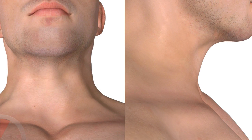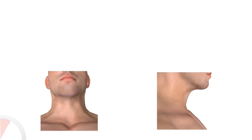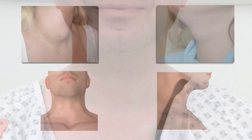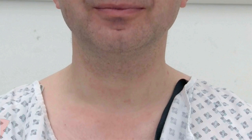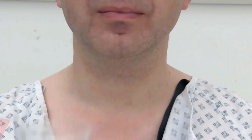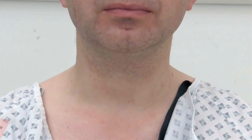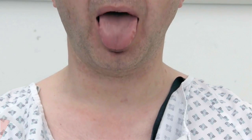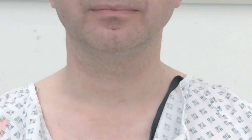Inspect the neck from the front and sides. Look for any skin changes or scars, particularly in the skin folds. Look for any masses, lumps, or obvious goiters. If you suspect a mass, ask the patient to swallow and observe for its movement — movement may indicate it is embedded within the thyroid gland. Then ask the patient to protrude their tongue, as a thyroglossal cyst may move upwards.